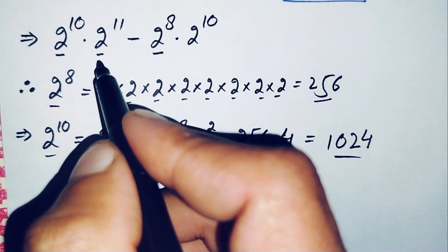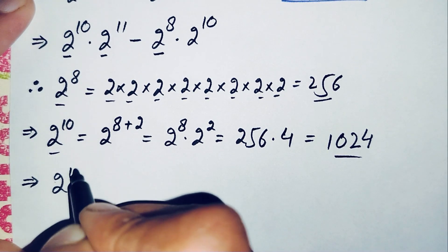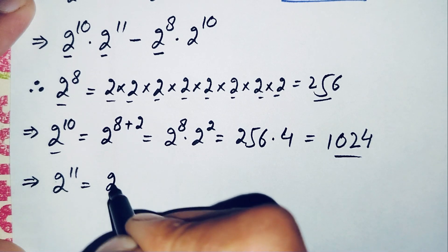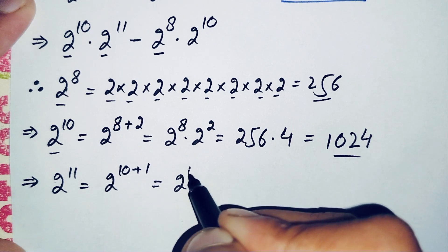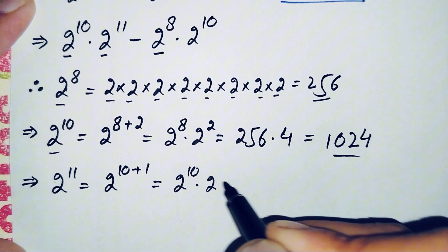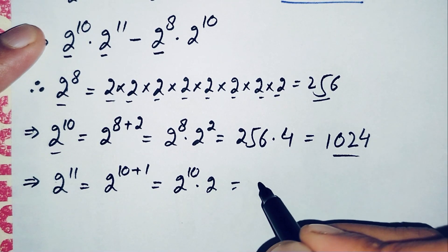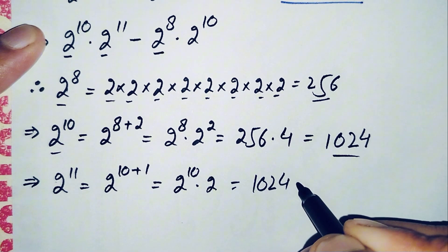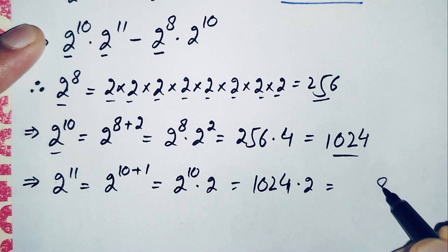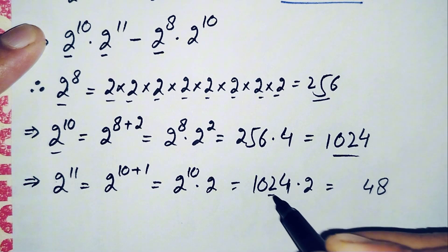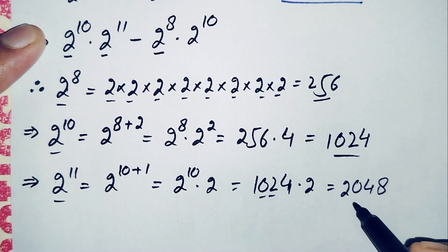Now to find the value of 2 raised to power 11, we write it as 2 raised to power 10 plus 1, which becomes 2 raised to power 10 times 2 raised to power 1, or simply times 2. We have 2 raised to power 10 equals 1024, so 1024 times 2: 2×4=8, 2×2=4, 2×0=0, 2×1=2. So the value of 2 raised to power 11 is 2048.